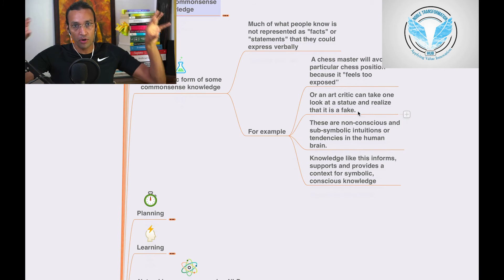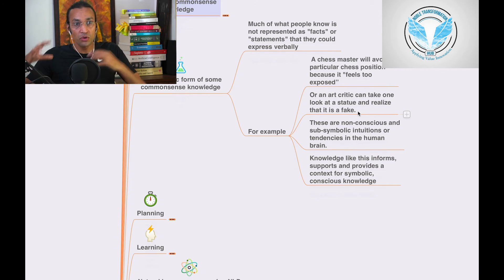So, there are a lot of problems. Birds, how they actually think, we don't know because we are not in that body. So, we need to understand that there is a problem, sub-symbolic form of some common sense knowledge.